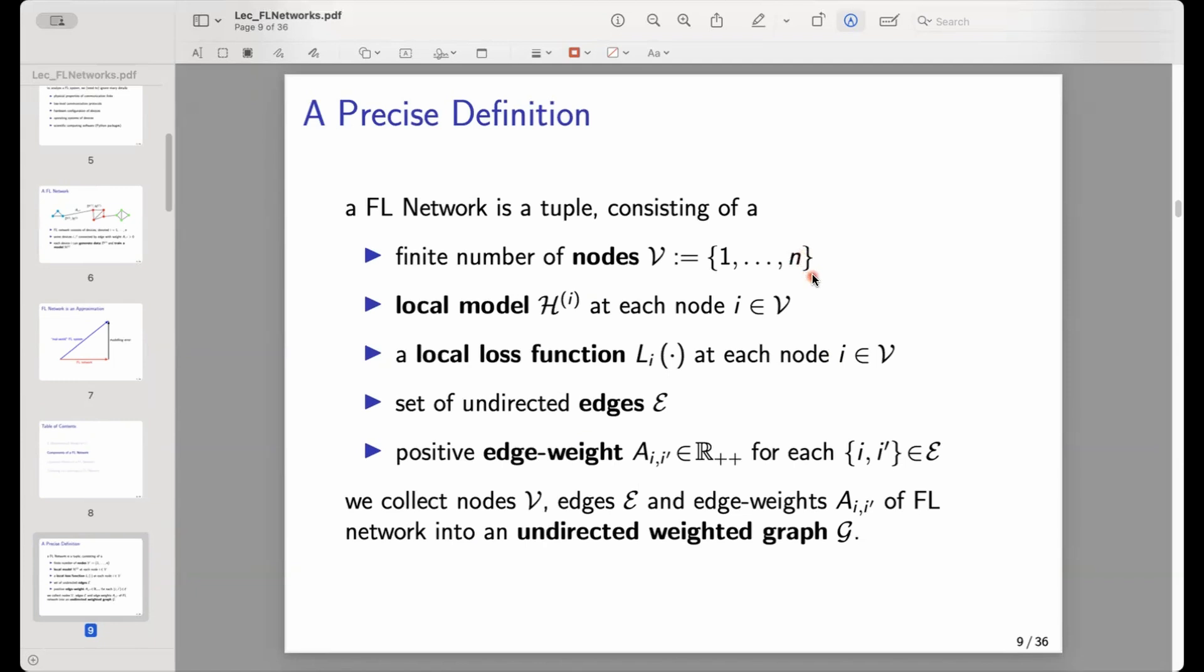There are also infinite graphs where the node set would be, for example, the integer numbers—there are infinitely many integer numbers—or all natural numbers. This we do not cover in this course. Within this course, we only consider federated learning networks that consist of arbitrarily, but finitely, many nodes.